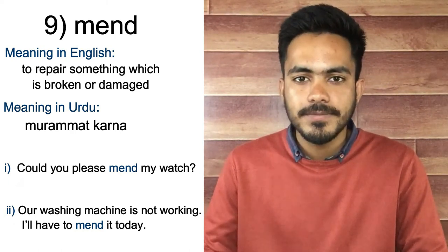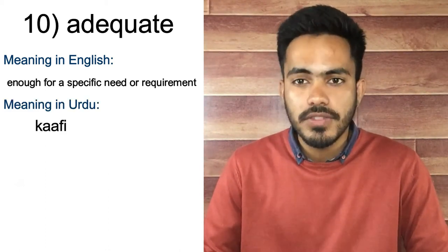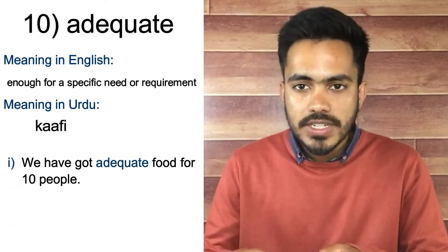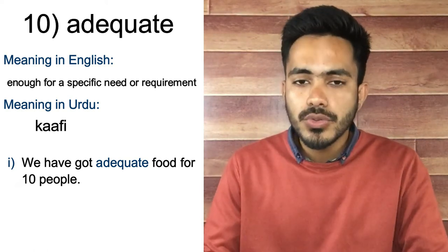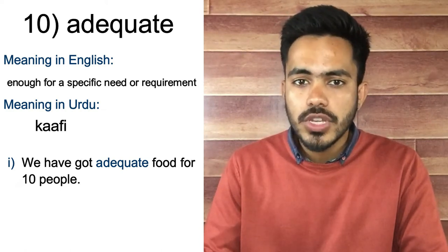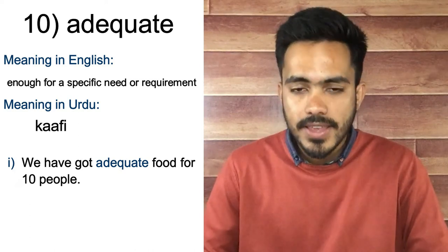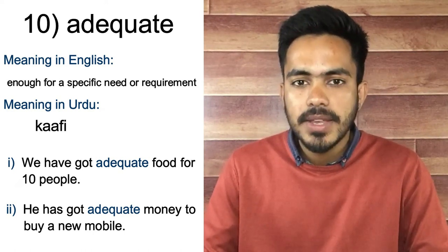Finally on number ten we have 'adequate'. In English it means enough for a specific need or requirement, and in Urdu it means کافی. For example: 'We have got adequate food for ten people.' We can also use 'enough' here, but adequate is a more advanced word. Second example: 'He has got adequate money to buy a new mobile.' That brings us to the end of the video. I hope you can use these words in your daily life speaking. We will meet again in the next video — till then, goodbye and take care of yourself.